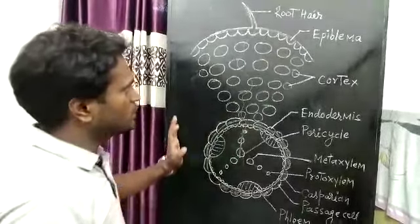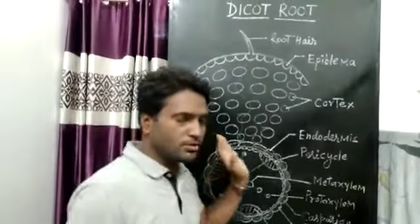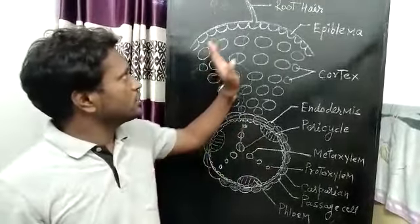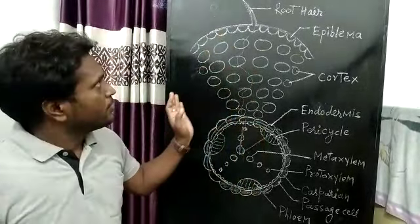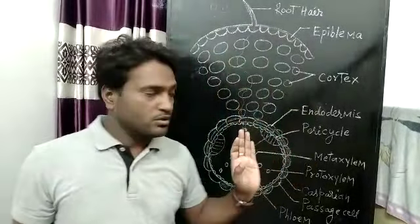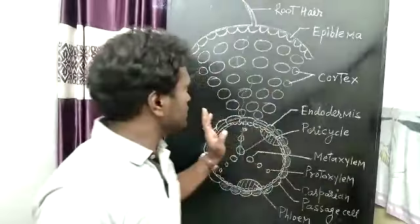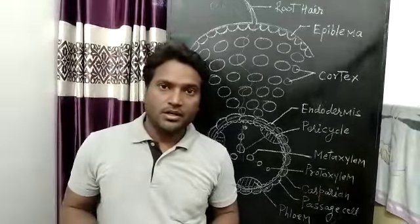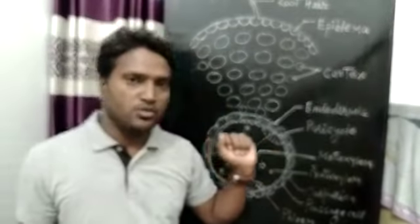This is the whole structure of the dicot root. In the next video lecture, we will study about the internal structure of the monocot root, and we will also compare the internal structure of the dicot root with the monocot root, which will make things more clear.